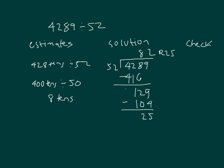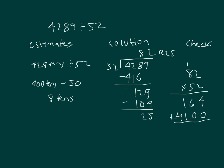Run our check: eighty-two times fifty-two, and then we'll add in the twenty-five. Two times two is four. Two times eight is sixteen. Place a zero. Five times two is ten — zero, regroup of one. Five times eight is forty, plus one is forty-one. Add those together — I get four thousand two hundred sixty-four. Add in the twenty-five, I get my original dividend: four thousand two hundred eighty-nine. So the problem checks.